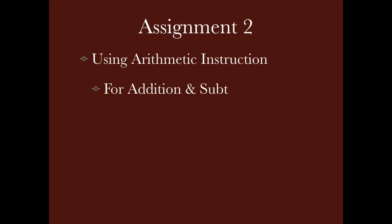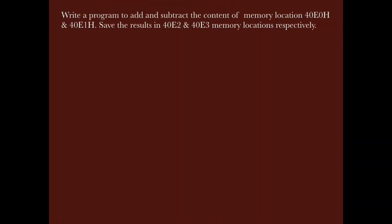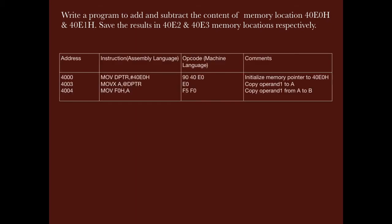The next assignment uses arithmetic instructions for addition and subtraction operations. The program objective is to add and subtract the contents of memory locations 40E0H and 40E1H, and the result is to be saved in 40E2H and 40E3H. We are again starting the program from the 4000 memory location and initializing the memory pointer to 40E0H.